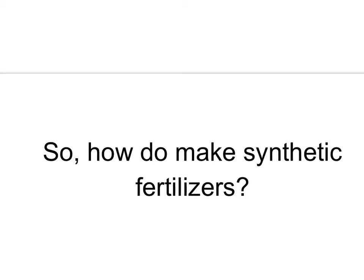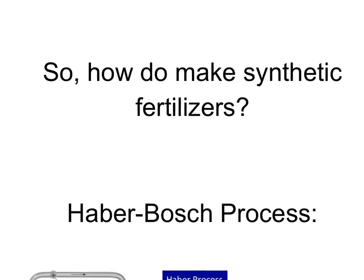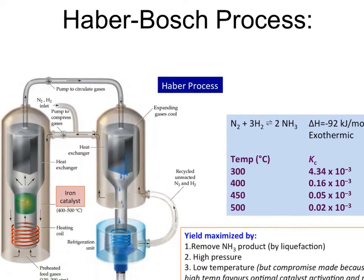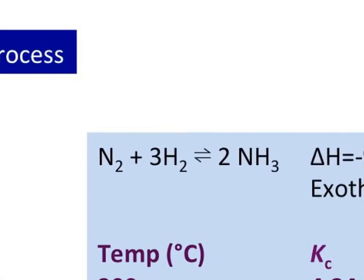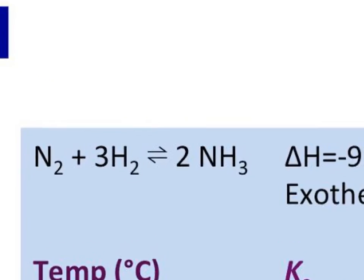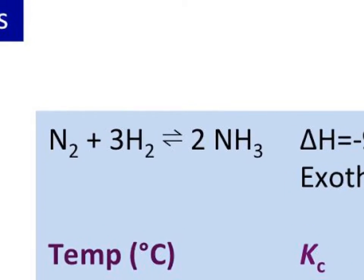You had a homework assignment where you were introduced to the Haber-Bosch process, so we're going to look at that in a little more detail here. This is the chemical reaction happening in the Haber-Bosch process: we take atmospheric nitrogen and gaseous hydrogen. Where are we getting the hydrogen? We need to split the water molecule to free up that hydrogen, and hydrogen and oxygen really like to be bonded together, so it requires a lot of energy to split a water molecule.